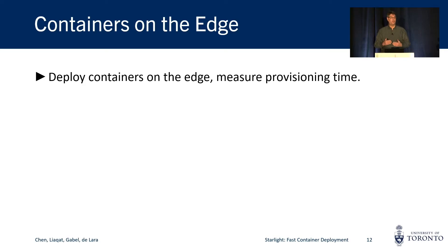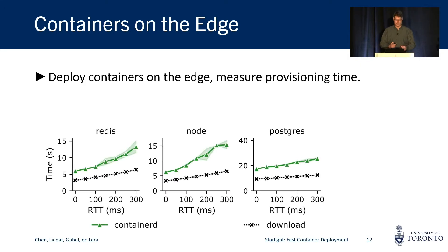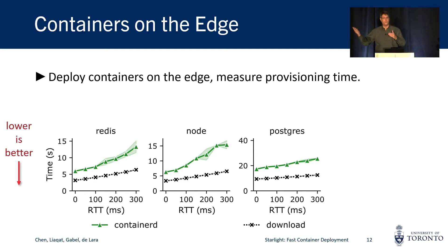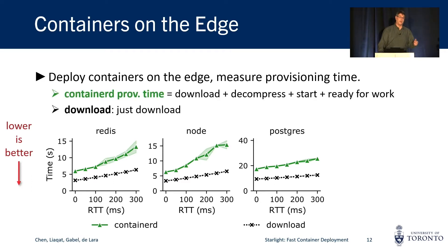To see what happens when we provision containers on the edge, we selected three popular containers and deployed them on a 100 megabit per second link with increased latency. On the x-axis you will see round-trip times, and on the y-axis you will see times, so lower is better. We start with cloud round-trip times of zero milliseconds and then move the worker further and further away from the registry until we reach about 300 milliseconds, which is a typical maximum for geo-distributed links. The green line shows container provisioning time — which we define as the time it takes to download, decompress the container contents, start the container, but also for the containerized application to report that it is actually ready for work.